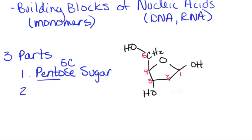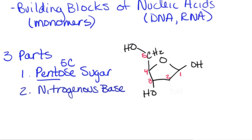The second part is what we call a nitrogenous base. The nitrogenous base is called that because it does contain a lot of nitrogen. There are different options for our nitrogenous bases — they have longer names: adenine, guanine, cytosine, thymine, and uracil as well. So there are actually five different bases. These bases are really what makes the nucleotides of DNA different from each other, and the ones in RNA different from each other.